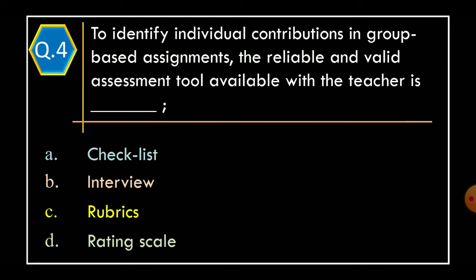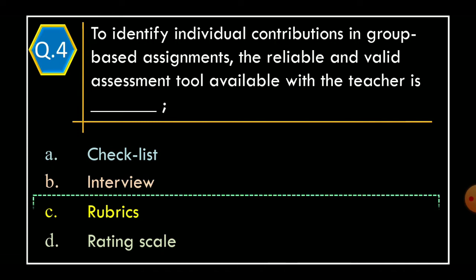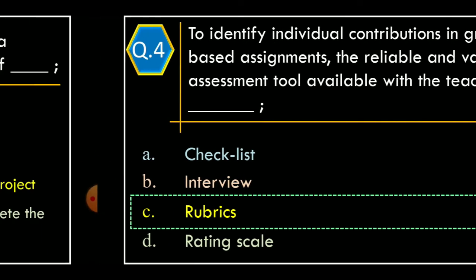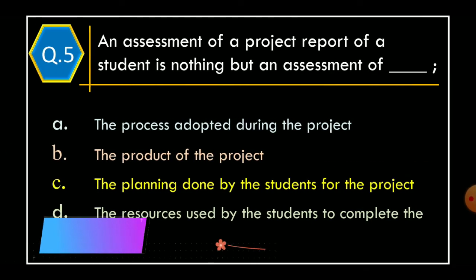Question 4: To identify individual contributions in group-based assignments, the reliable and valid assessment tool available with the teacher is — Option A: checklist; Option B: interview; Option C: rubrics; Option D: rating scale. The correct option is Option C: rubrics.